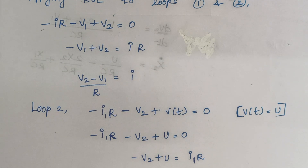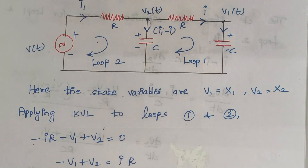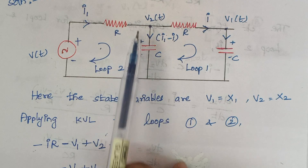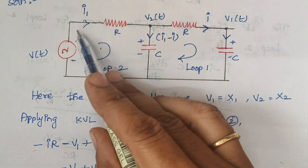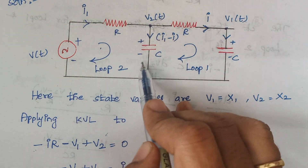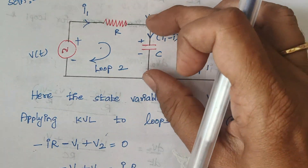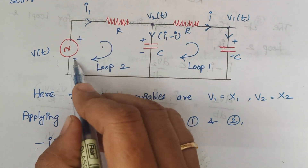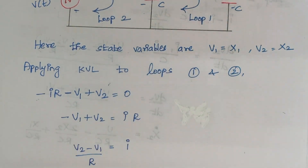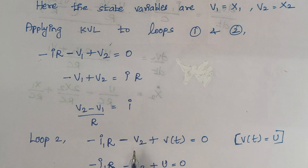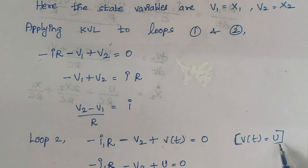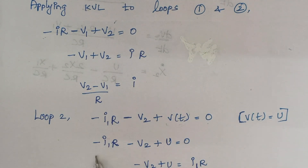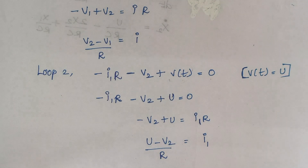Next, we apply KVL to loop 2. The voltage drop across the resistor is minus I1·R. Moving plus to minus across the capacitor gives minus V2, and moving minus to plus gives plus U, where V(t) is the input voltage represented as U. So the equation is: minus I1·R minus V2 plus U = 0. Rearranging gives the expression for I1.